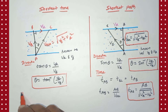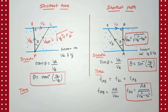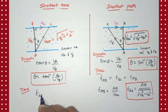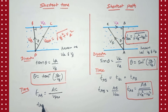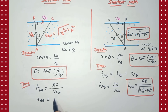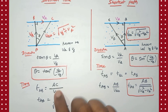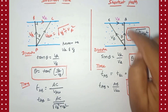Now we find the time for the shortest time case. Time along AC: distance is AC and velocity is the resultant velocity. Therefore, time = AC / √(vb² + vr²). Note that in this case the resultant velocity is the hypotenuse, whereas in the shortest path case the resultant velocity was the adjacent side — a slight but important difference.